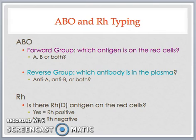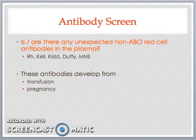Patient red cells are tested against reagent anti-D to determine whether there is D antigen on the red cell surface, making that individual RHD positive, or if the D antigen is not present on the red cell surface, that individual is RHD negative. In addition to the D antigen, the Rhesus blood system contains other antigens, and there are also other non-ABO blood systems including Kell, Kidd, Duffy, and the MNS system that have their own antigens too.